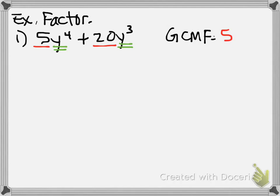Do they both have a y? Okay. The trick is how many of them can we pull out? And we can pull out most three. So that is going to be my GCMF. So what do I do? I go back to my original problem, and I divide both of them by 5y cubed. So 5 divided by 5 is 1. What's y to the 4th divided by y cubed? Y.